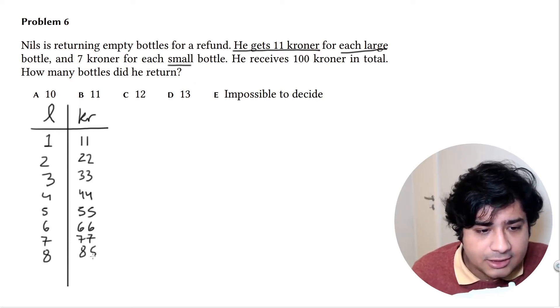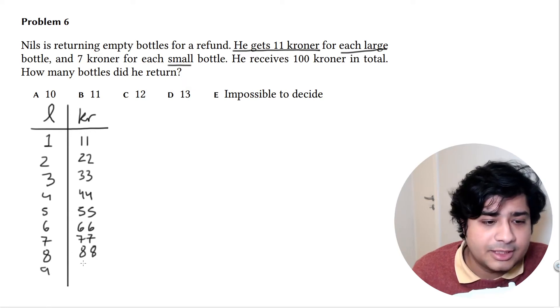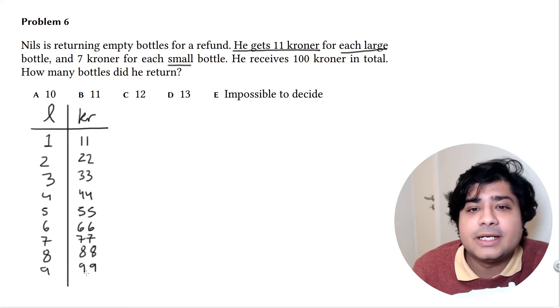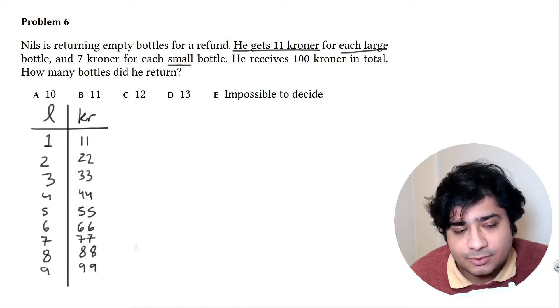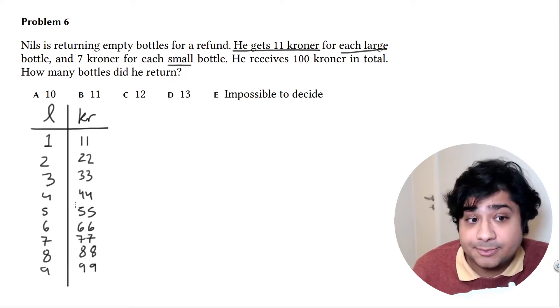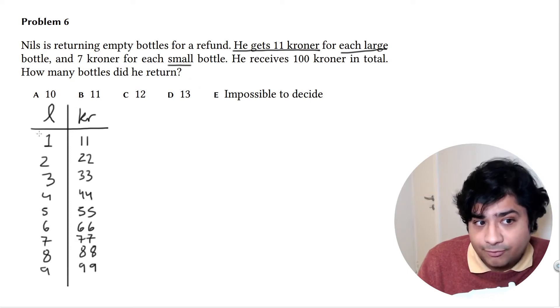Eight would be 88, nine would be 99. Do we even need to do 10? Not really, because it can't be 99—it's 100 kroner in total, and if it was 99, the small bottles would only be 1.